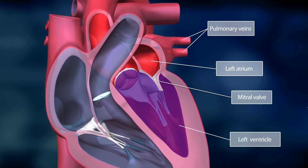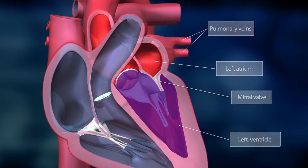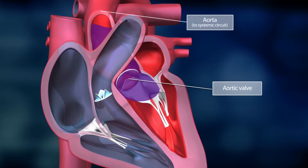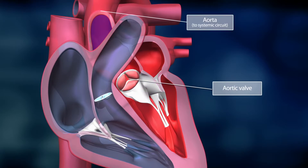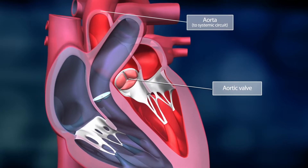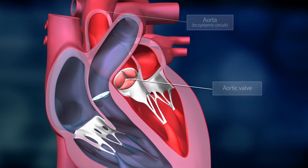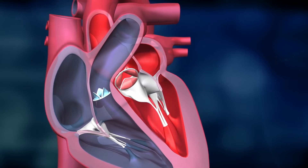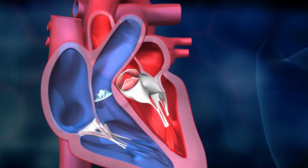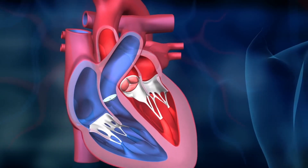Now the left ventricle contracts and the aortic valve opens. The oxygen-enriched blood flows into the aorta and is distributed to every organ in the body via the blood circulatory system. The aortic valve quickly closes to prevent blood from flowing back into the left ventricle. At the same time, a new contraction takes place in the right ventricle and the systemic blood circuit begins anew.